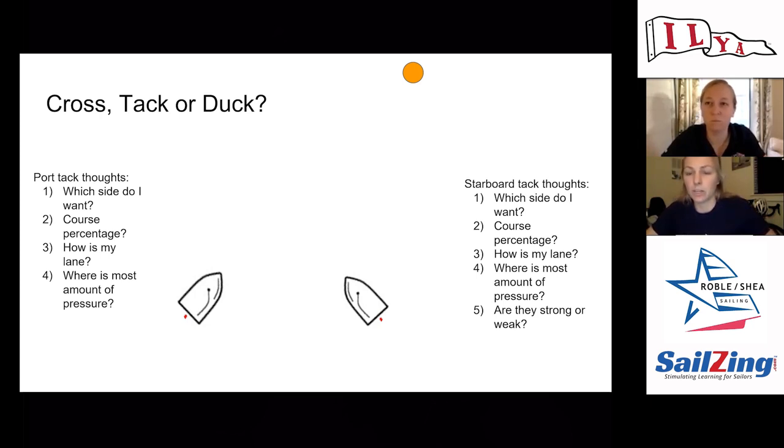And then for the starboard boat this is especially important: are they strong or weak? Can they put a strong lee bow in on us or are they weak to put a lee bow on us? That'll answer your question if they're going to likely duck behind you or not. These are just really important, simple ways to think about it. The course percentage is really important, especially in this scenario.